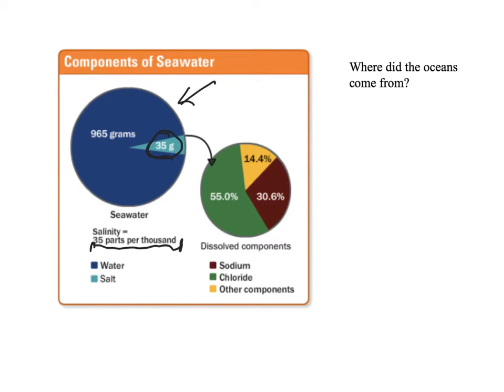That means if I have a thousand grams like we do in our example, 35 grams of that is going to be salt. Remember that this is by mass, not by volume or amount. It's strictly by mass.